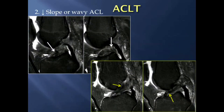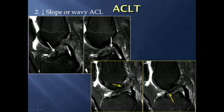The second sign is where the entire ACL has decreased slope or a wavy appearance. Typically, to evaluate the entire ACL you want to look at two consecutive images that go through it. Notice on this one you have a decreased slope, and on this one a wavy appearance on both images through the entire ACL — both of these are complete ACL tears.